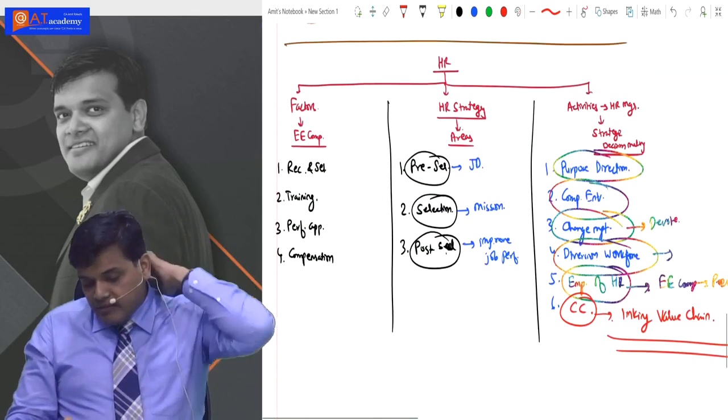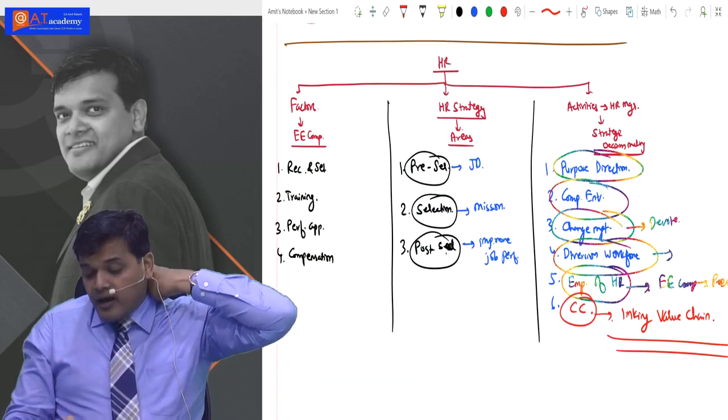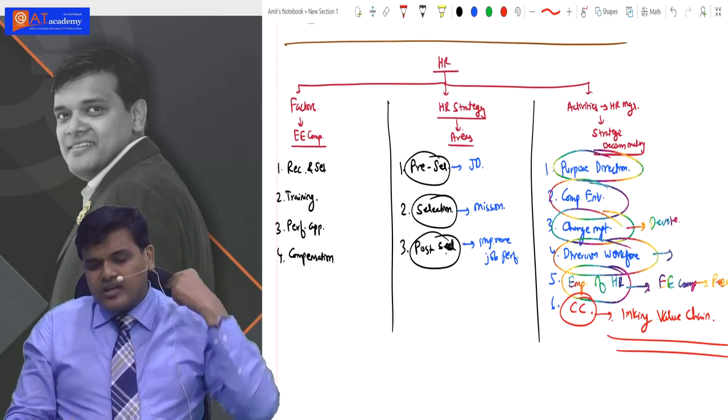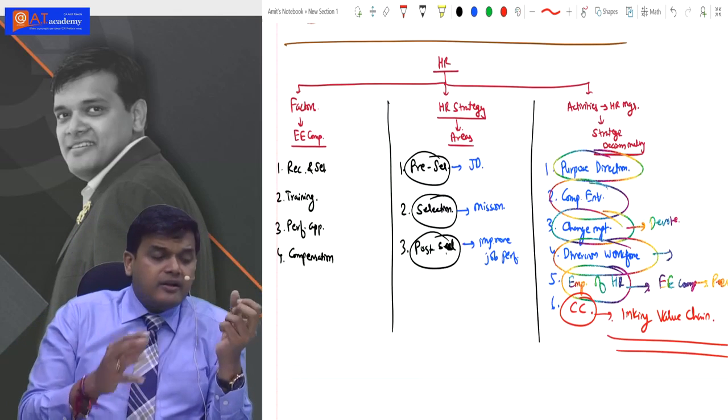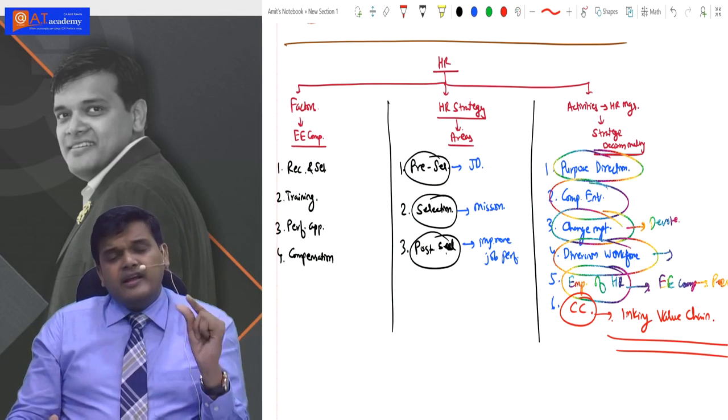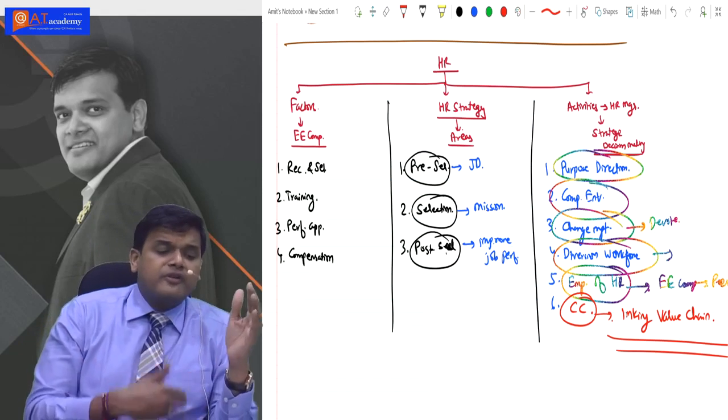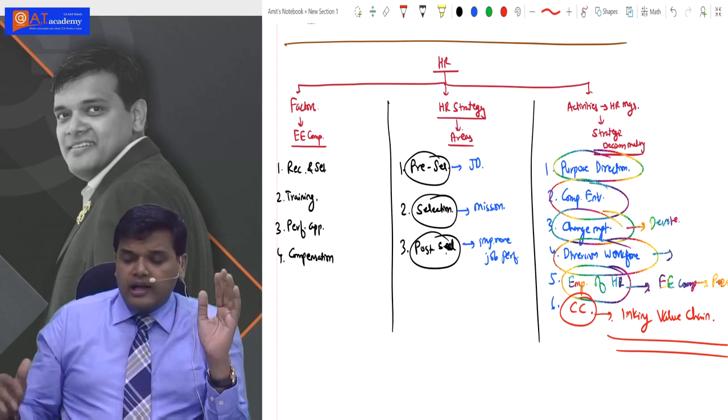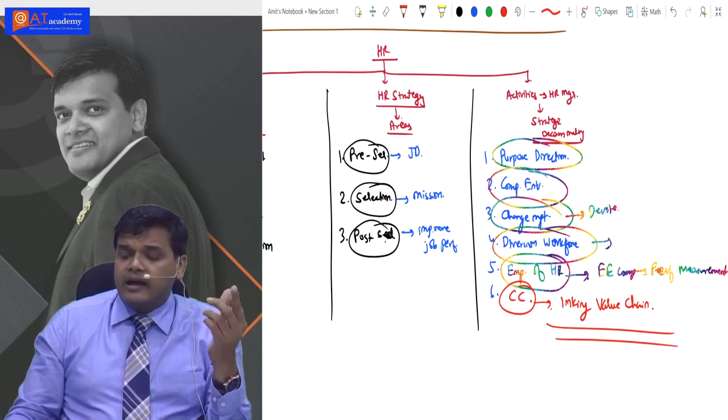After that, in the last case, we saw HR. First point: what are the factors affecting employee competence? There are four factors: recruitment, selection, training, and performance appraisal and compensation. In HR strategy, which areas should we focus on? There are three: pre-selection process, selection process, and post-selection process. Last point: what activities will the HR manager do?